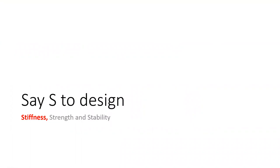There are three items in design: stiffness, strength, and stability. We are going to go through all of them. We start out with S for stiffness.